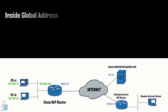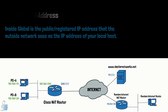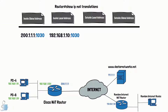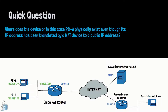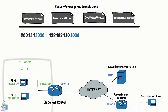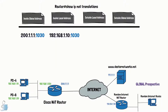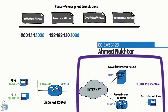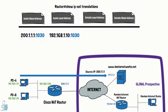The inside global address is the public or registered address that the outside network sees as the IP address of your local host PCA. A quick question: where does PCA physically exist even though its IP address has been translated by a NAT device to a public IP address? It still physically resides inside your organization, which justifies the inside part. Global is the perspective, so from the perspective of all users on the internet, PCA will be seen as its public IP address — meaning when PCA accesses drnetworks.net, its IP will be seen as 200.1.1.1.